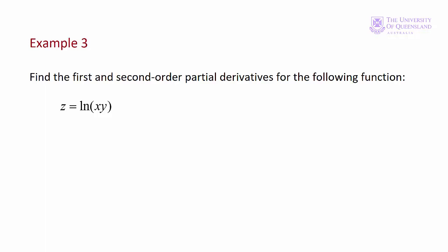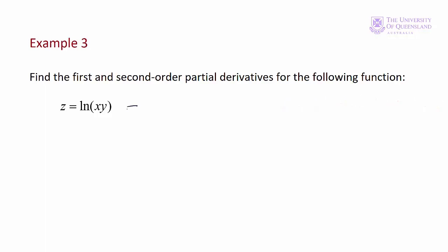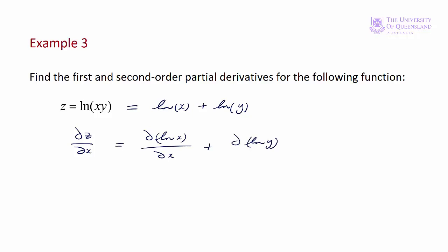Recall that the log of ab is equal to the log of a plus the log of b. Applying that rule to our function, z is equal to log of x plus log of y. Now we take the first order partial: del z del x is equal to del log x over del x plus del log y over del x. The first derivative of log of x is simply 1 on x, and since y is held constant, the second term equals 0. So we have del z del x is equal to 1 on x.